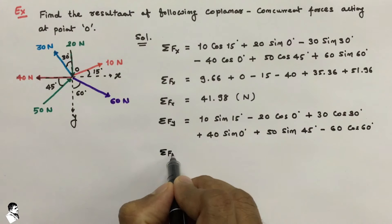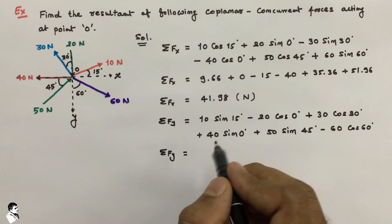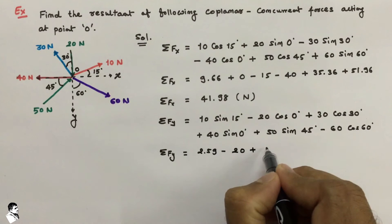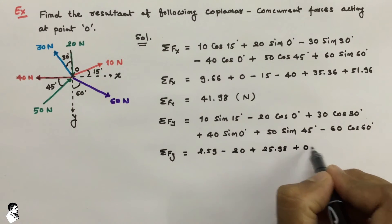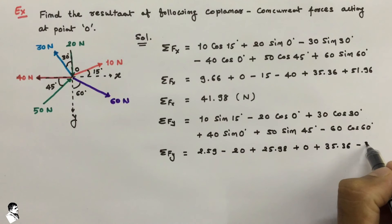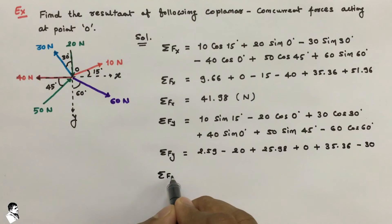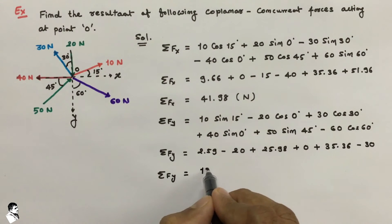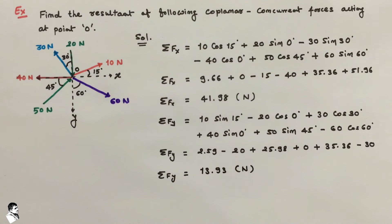Solving the Y-axis summation: 2.59 minus 20 plus 25.98 plus 0 plus 35.36 minus 30. The total summation of all force components along the Y direction is 13.93 Newton.